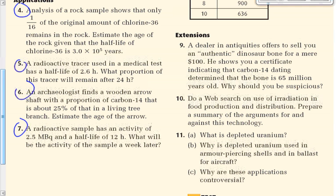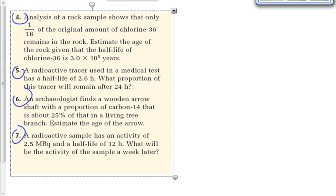Problem 4: Analysis of a rock sample shows that only 1/16th of the original amount of chlorine-36 remains in the rock. Estimate the age of the rock, given that the half-life of chlorine-36 is 3.0×10⁵ years. That's going to be T₁/₂. We only have 1/16th of the original amount remaining.